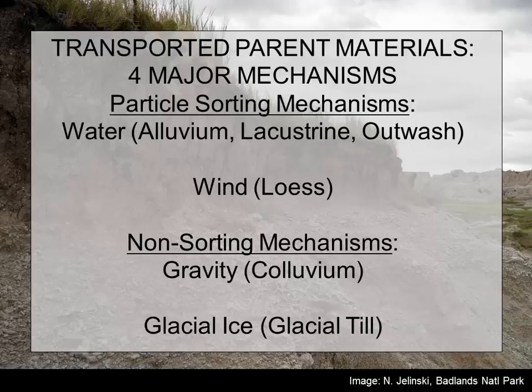Four mechanisms transport sediments and bring in parent materials in Minnesota. The two sorting mechanisms are water and wind. For water, we'll talk about three different parent materials: alluvium, lacustrine materials, and outwash. For wind, we generally talk about loess. And then we have two non-sorting mechanisms: gravity — things rolling downhill — and glacial ice. When materials transported by glacial ice are not washed out by water and are just dumped, we end up with a material called glacial till, which is an unsorted loamy material dumped out of glaciers.